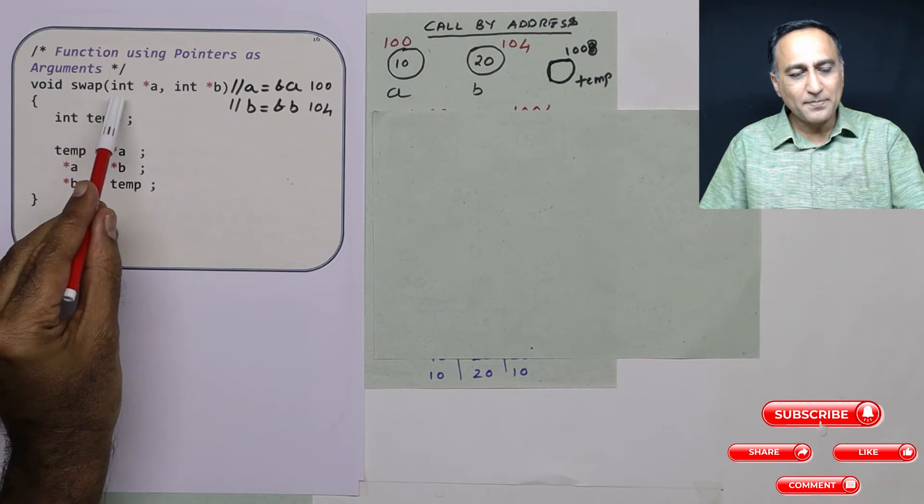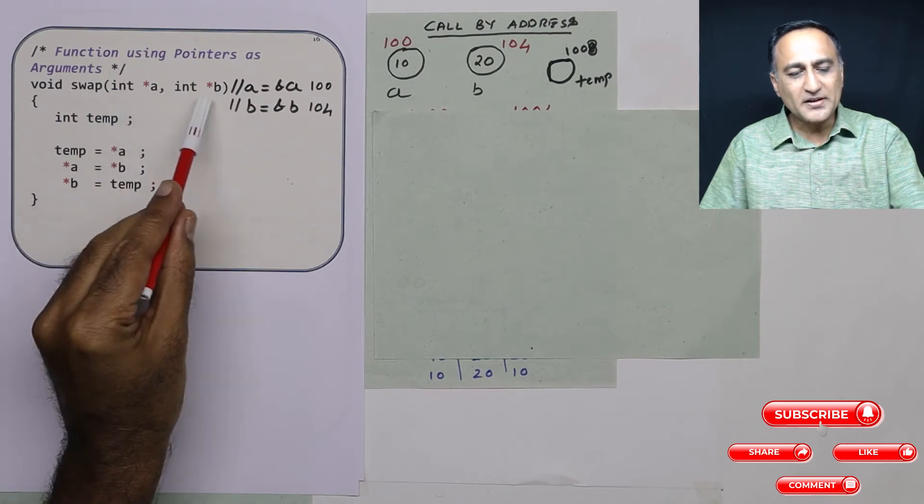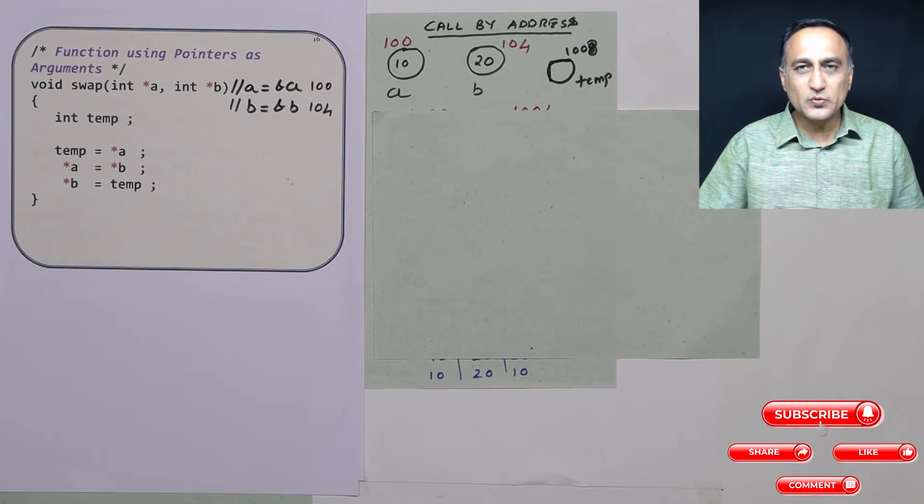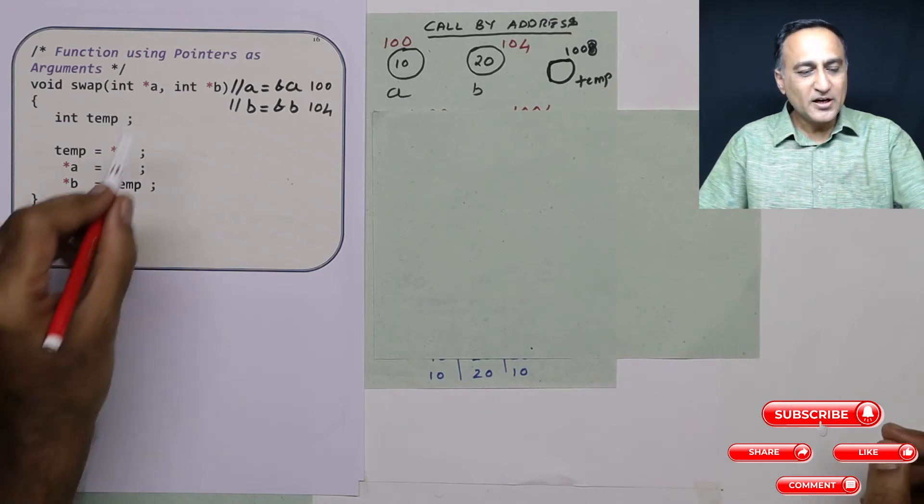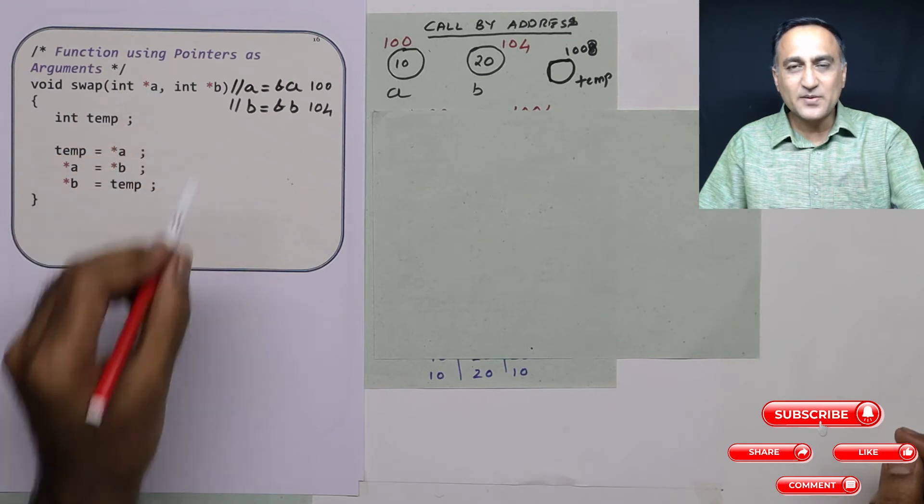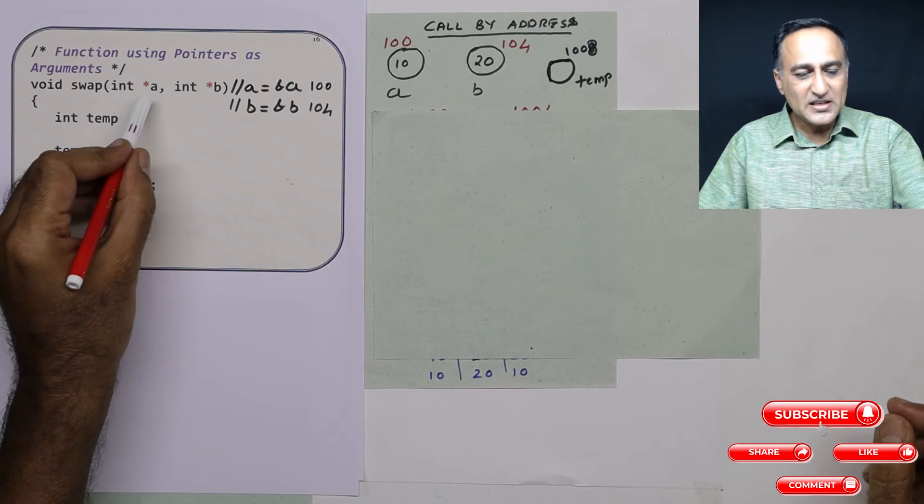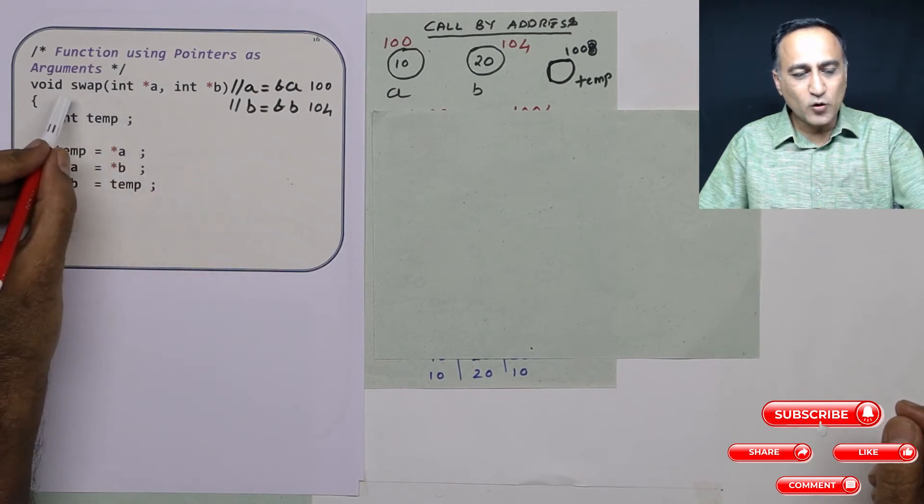When I give the address of a and b in the function called swap, I have two pointer type of variables. That means these are special variables which can hold the address of some other variables. But this star a and star b are not the same as a and b in main. These two pointer variables are local to swap.